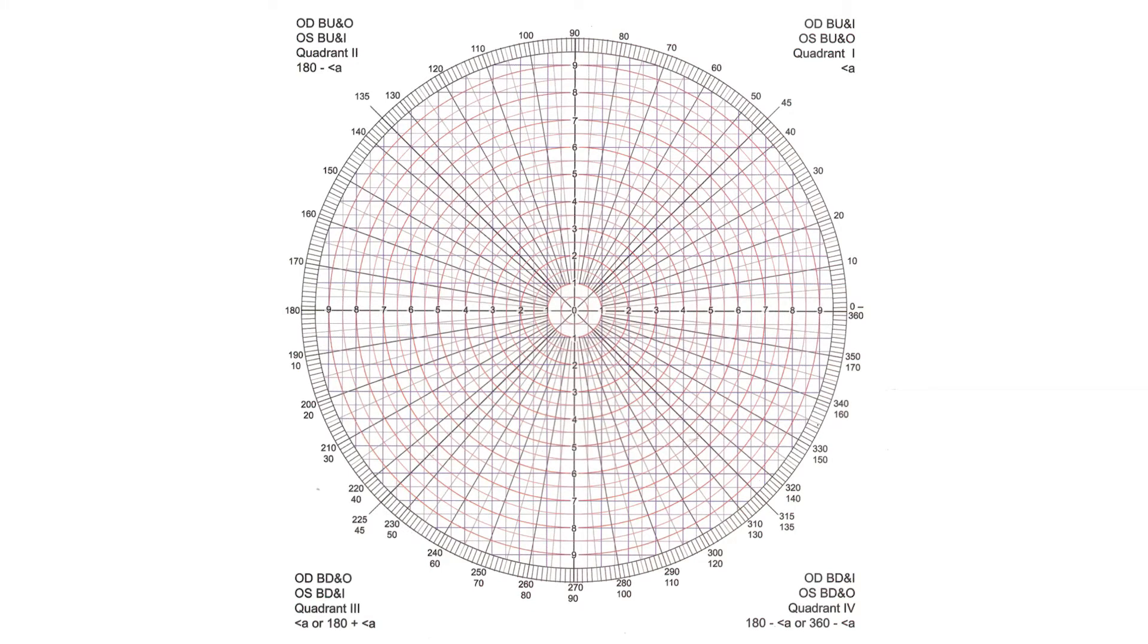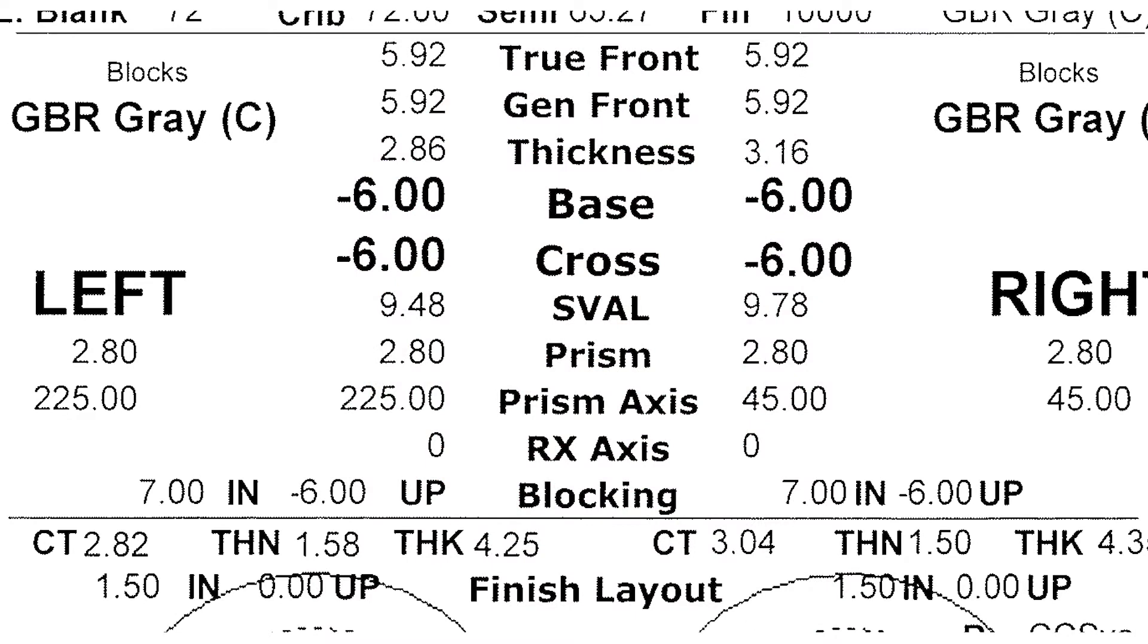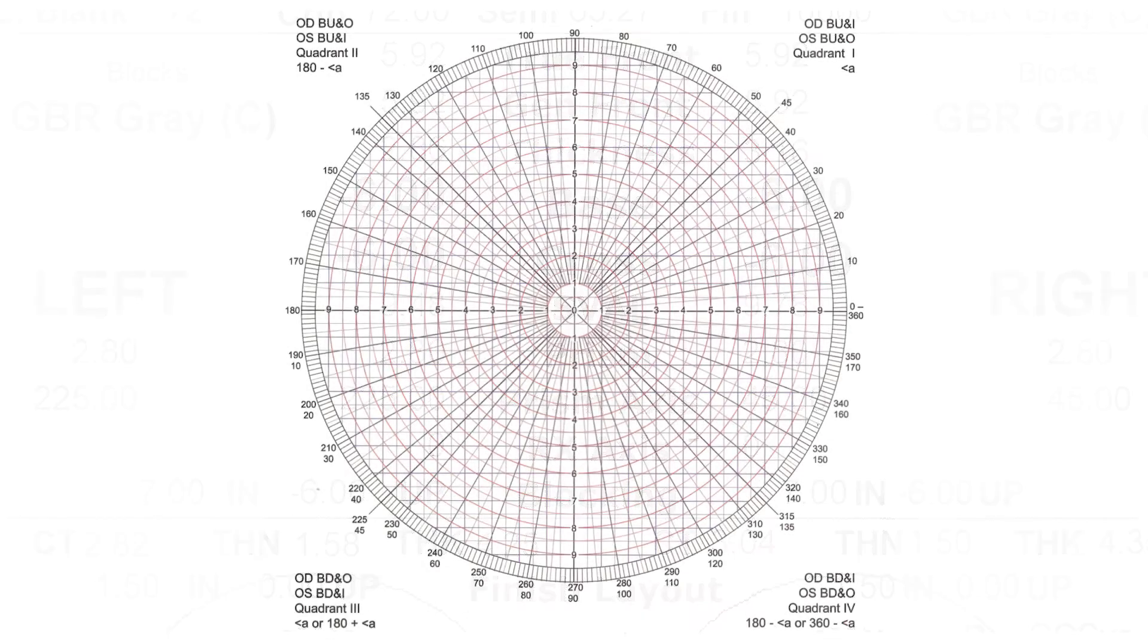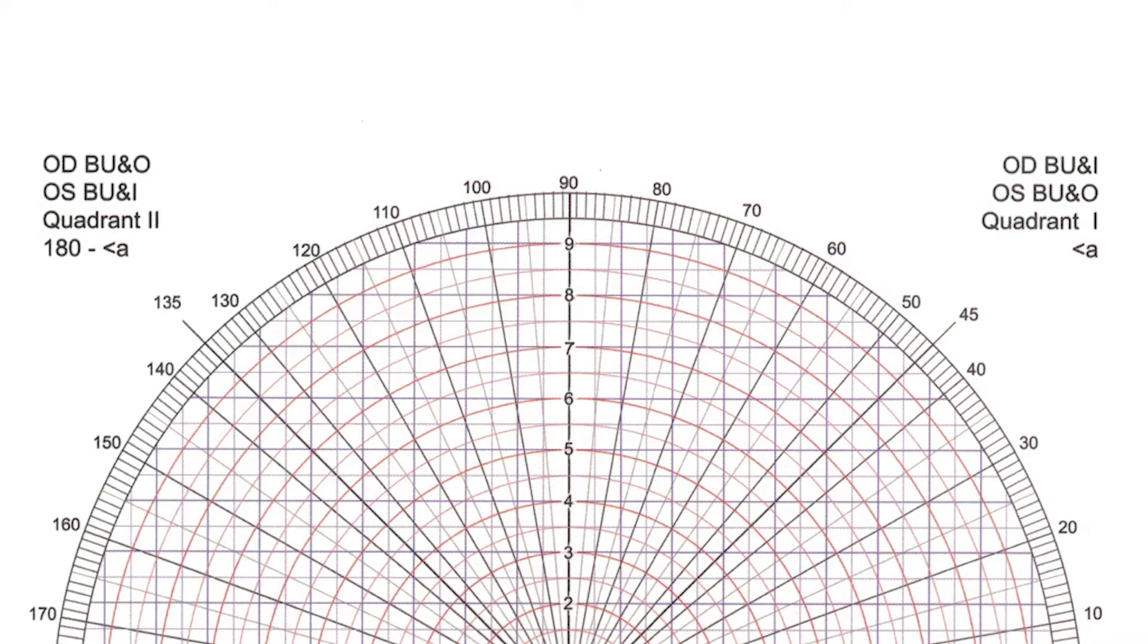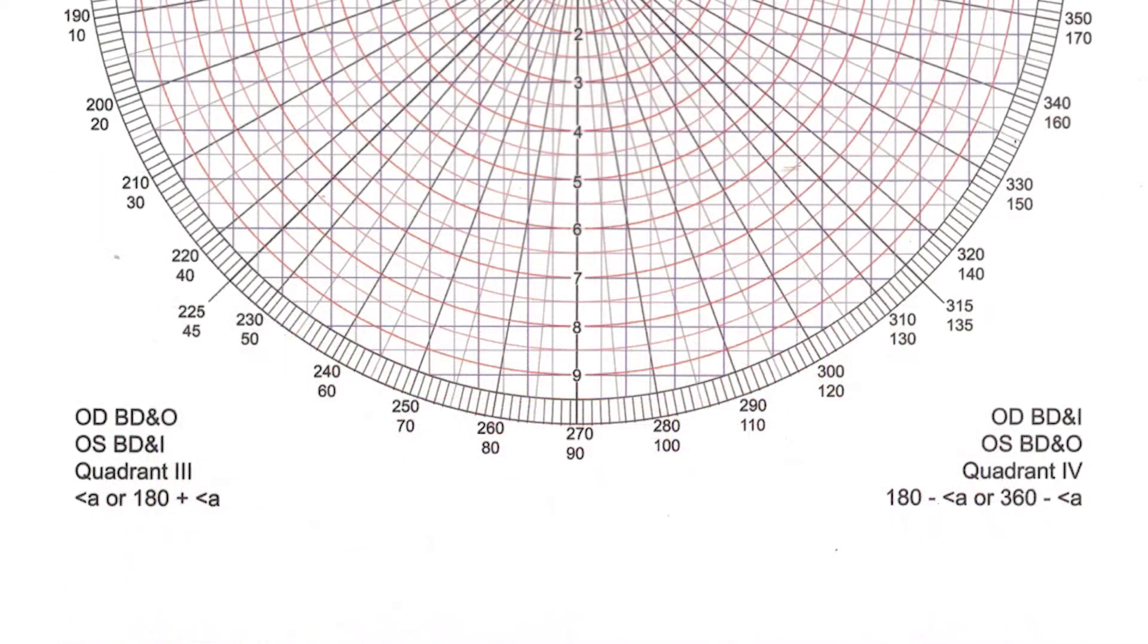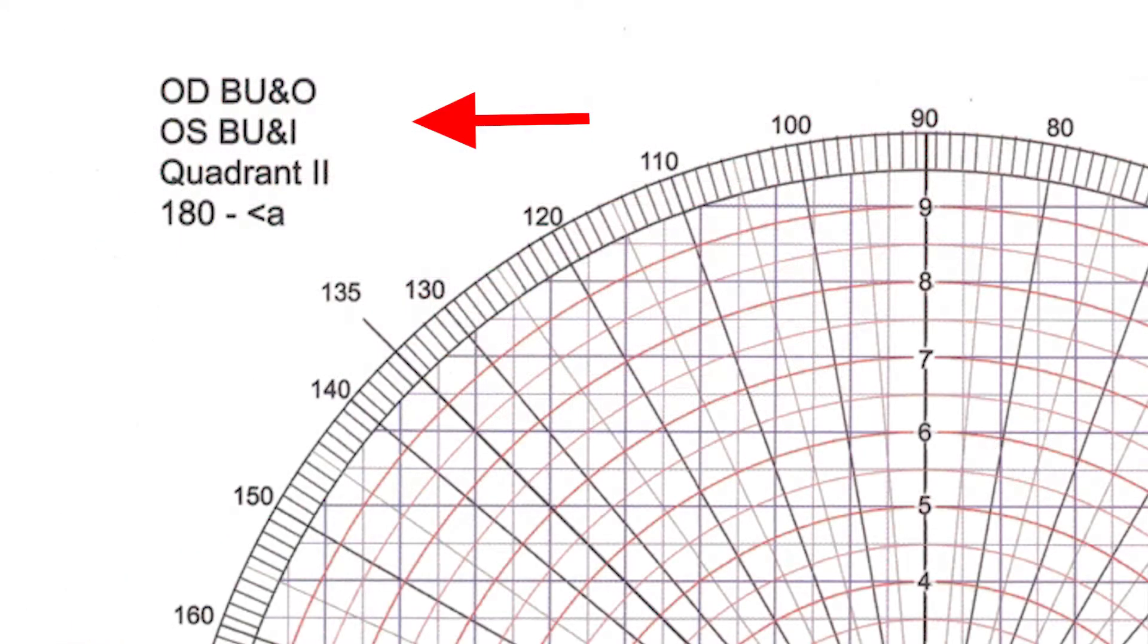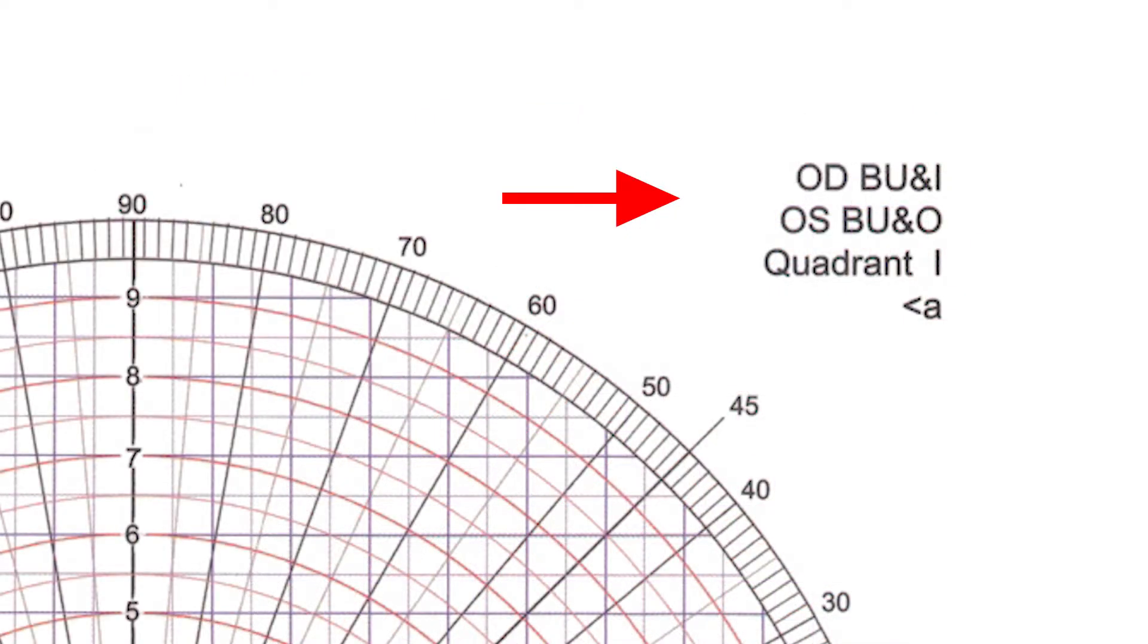When working with resultant prism, we can replace our old base to base, apex to apex drawings that we were using for simple Prentice's formula, and we can use this layout grid instead. This is how labs actually work with prism. On a job order with resultant prism, you may not even see the usual base in, base out, but rather an amount at a specified degree. The grid can be thought of as a lens, or as the lens in the lens meter. Pay close attention to the quadrants and your right-left. Notice that up is up and down is down, regardless of which lens you're looking at. However, in and out changes when you move from your right and your left lenses.